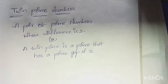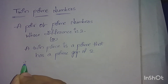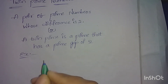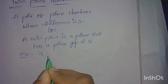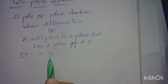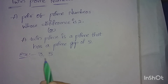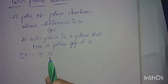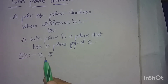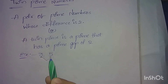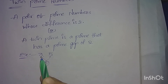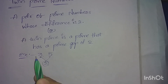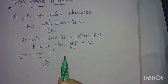Let's look at examples. 3 and 5. This is a twin prime pair. If it is between the twin prime numbers, we need the difference between the two numbers — and we get a difference of 2. So, we have twin prime numbers.